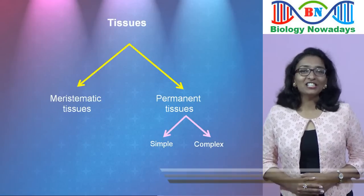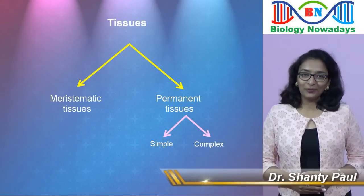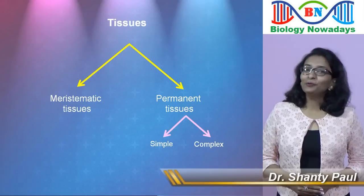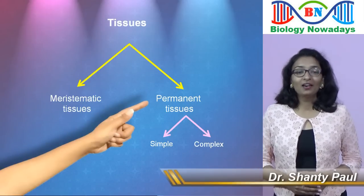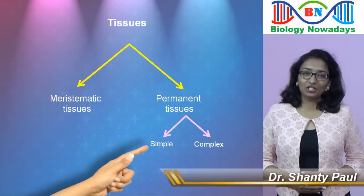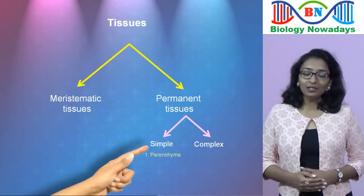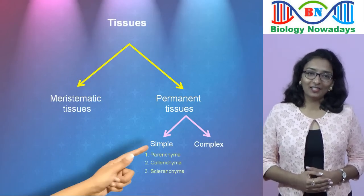Hello everyone, it's me Shendi and you're watching Biology Nowadays. In this video, we will discuss about permanent tissues, mainly the simple permanent tissues which include parenchyma, colenchyma and sclerenchyma.